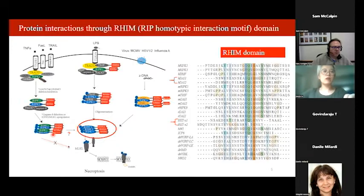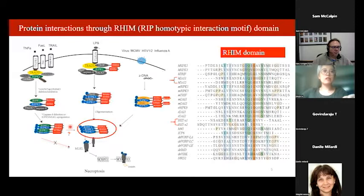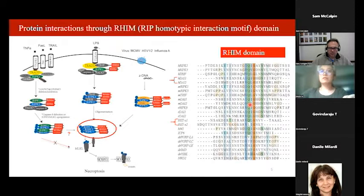We also want to understand how the hetero-oligomer can induce homo-oligomer formation. The RIP homotypic interaction motif (RHIM) domain is important — protein oligomerization is initiated through intermolecular interactions between RHIM domains. The RHIM is a conserved sequence where the most conserved segment is four residues: the first and third are always hydrophobic, the second is Q (glutamine), and the last is glycine.